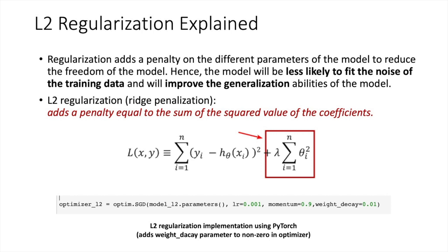In this page, we will more detailedly explain the L2 regularization. It adds a penalty on the different parameters of the model to reduce the freedom of the model. Hence, the model will be less likely to fit the noise of the training data and will improve the generalization abilities of the model. Which means that we have added a penalty equal to the sum of the square value of the coefficients to our loss function. And from the codes here, we can see the implementation using PyTorch is to add weight decay parameter to non-zero in optimizer.